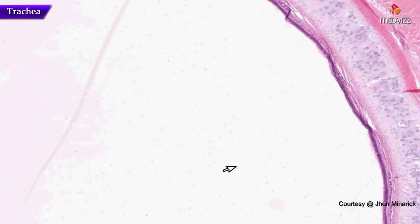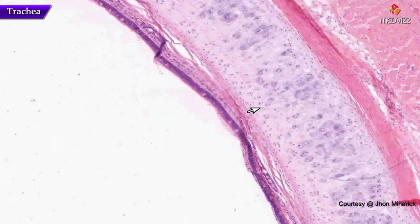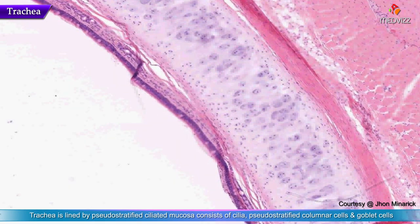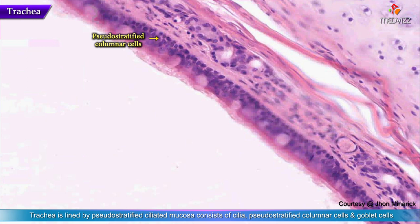Let's take a closer look. The trachea is considered part of the upper respiratory tract. You can see that we have a columnar mucosa here filled with ciliated pseudostratified columnar cells with occasional goblet cells. Here's a nice row of cilia along here. Here's a goblet cell, here's a goblet cell, here's a goblet cell.